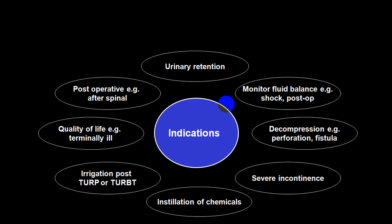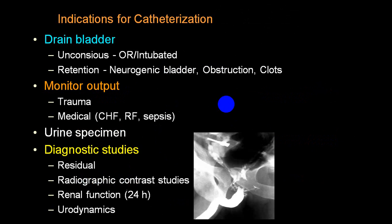To summarize indications: urinary retention, postoperative period, terminally ill patients to improve quality of life, monitoring fluid balance via input/output chart, decompression in shock or postoperative patients, severe incontinence, introduction of chemotherapy or irrigation, and in TURP for enlarged prostate or BPH. Grouped categories include: draining the bladder in unconscious or intubated patients, retention from neurogenic bladder, obstruction, or clots.